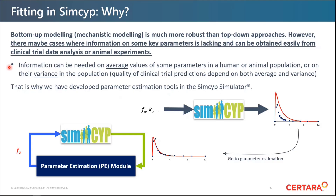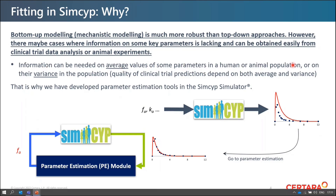Information can be needed not only on average parameter values in human or animal populations, but also on their variance in the population. The quality of clinical trial prediction depends simultaneously on the average values and the variances used for simulation across the various parameters of your model. To answer this need, we have developed parameter estimation in the SIMSIP simulator — instead of doing forward simulation prediction, you use a parameter estimation module which loops through parameters to better fit your data.